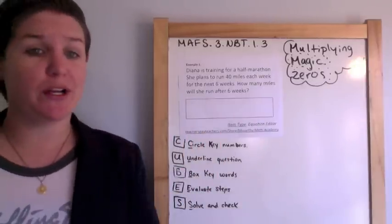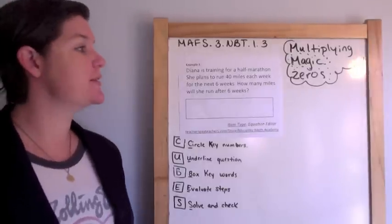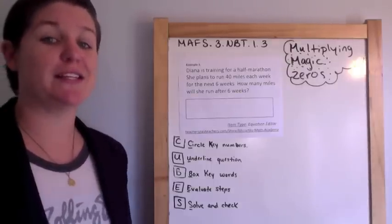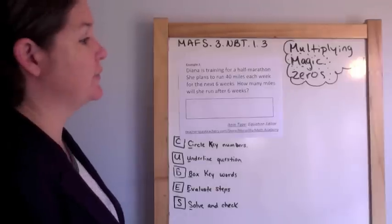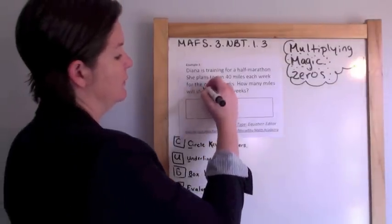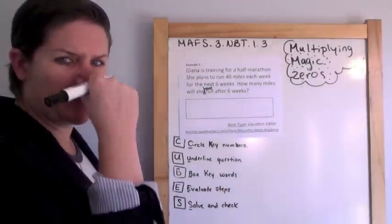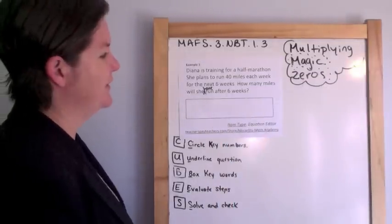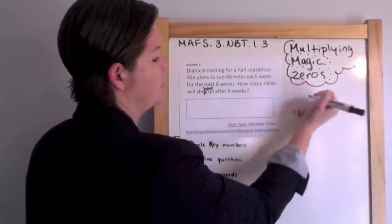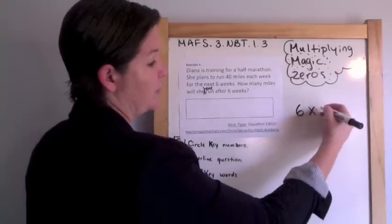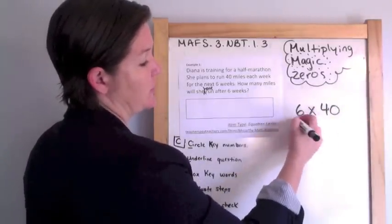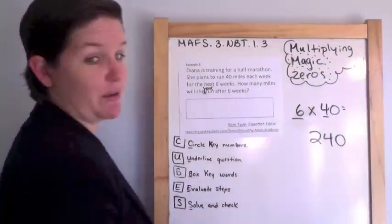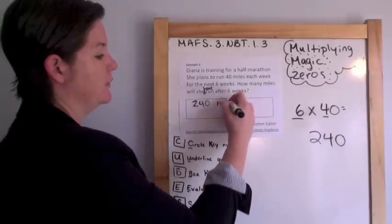This one could have word problems or it could not. This first one is a word problem with an equation editor response. Diana is training for a half marathon. She plans to run 40 miles each week for the next six weeks. How many miles will she have completed after the six weeks are done? She's running 40 miles for six weeks — that's your group. Here's our magic zeros: six times four equals 24, and then we have one zero, so we put our zero down there. 240 miles.